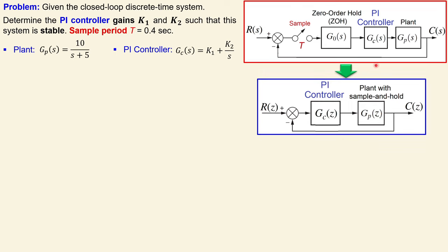We can convert this system such that the PI controller will be converted to a PI controller in the discrete time domain, and the plant together with the zero order hold and sampling will form a new transfer function Gp in terms of the z parameter.